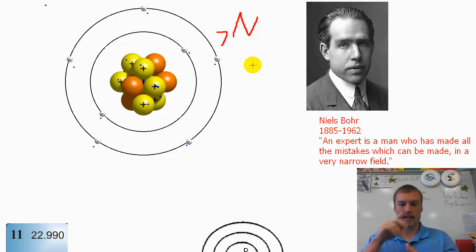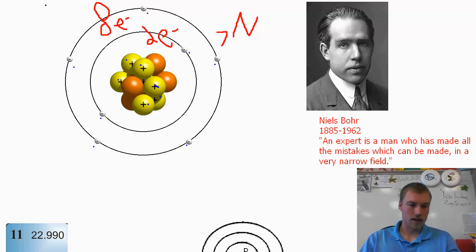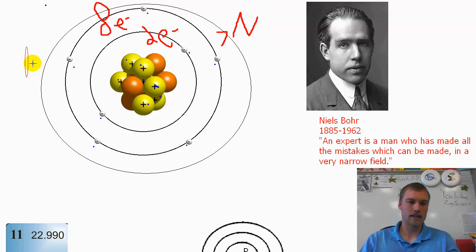And what the model tells us is that in the first energy level we can have 2 electrons, and then in the second level we can have 8 electrons. And then subsequent levels we can have a third level. Nitrogen doesn't have quite enough electrons to fill this level, but if there was another level we could show that here, and that third level would consist of 18 electrons.